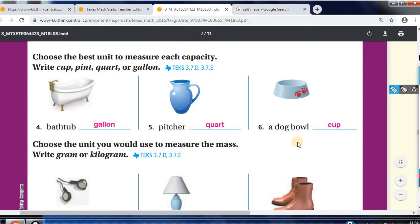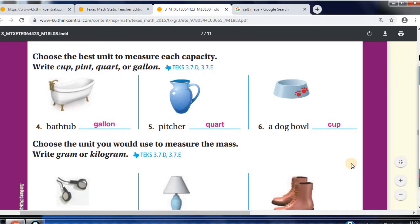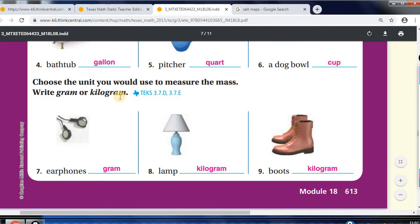We're going to choose the best unit to measure each capacity. We're looking at cup, pint, quart, or gallons. So, you've got a bathtub, which is the largest one, the gallon. You have a pitcher. It's the one in the middles. It's the quart. And then a dog bowl, which you would use a cup for. Then you have to use the unit you would use to measure the mass. We just did the mass right now. Earphones would be in grams. A lamp would be in kilograms. And the boots would be in kilograms. So, you should already start seeing how these units to measure mass are related to the objects they are being used for.